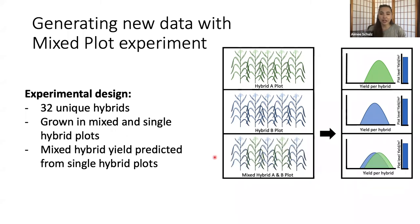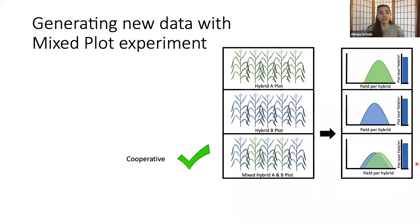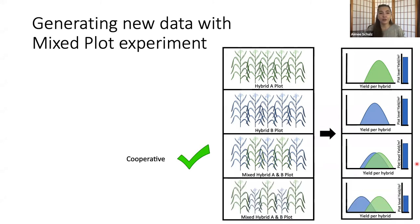By looking at the distribution and total plot-level yield, I can evaluate the impact of different growth strategies on neighboring individuals. In the hypothetical cooperative scenario with hybrid A and hybrid B, the yield per hybrid in a mixed plot is approximately the same as in single hybrid plots, and overall plot-level yield remains constant — indicating cooperative growth strategies with no yield penalty. However, if hybrid A is much taller and shades out hybrid B, you see a shift in the yield distribution and the overall plot-level yield is lower, indicating competition between the growth strategies.